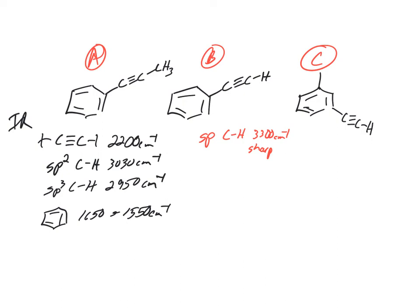What about C? C is going to have SP3 C-Hs and aromatic SP2 C-Hs. It's also going to have an SP C-H and the alkyne. To differentiate B and C: C has SP3 C-Hs, B does not. A and C can be differentiated because A has SP3 C-Hs, but A does not have an SP C-H. So you can see how we could tell these apart from each other.